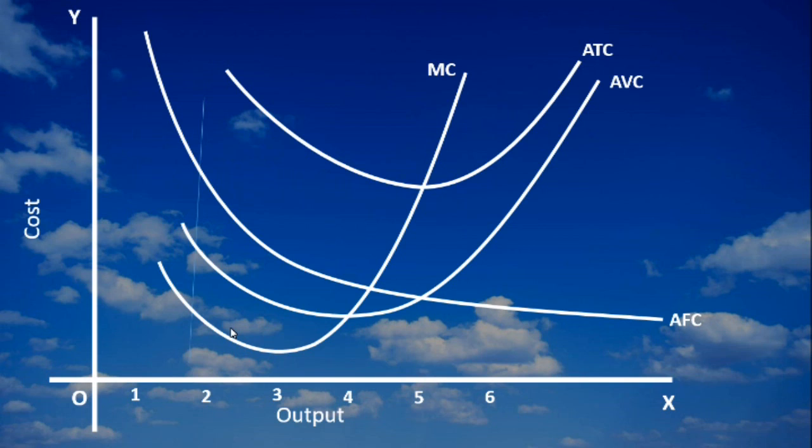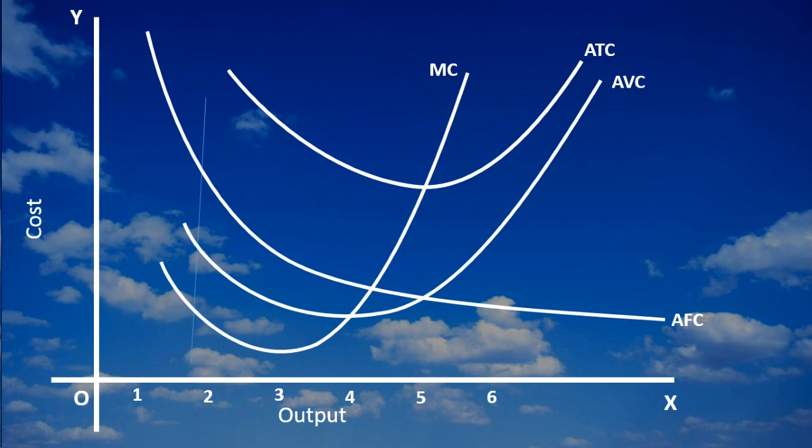It must take a rectangular hyperbola shape. The most important point is that the marginal cost curve passes through the minimum point of average variable cost and average total cost curves. Well, we have completed the graph.